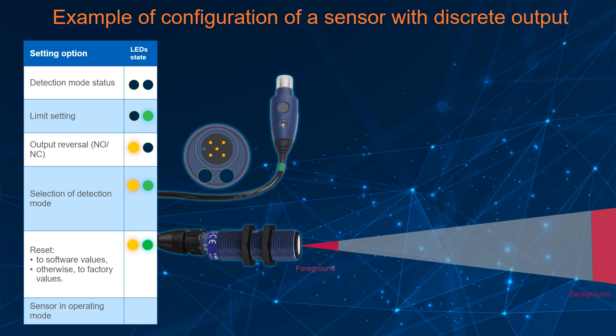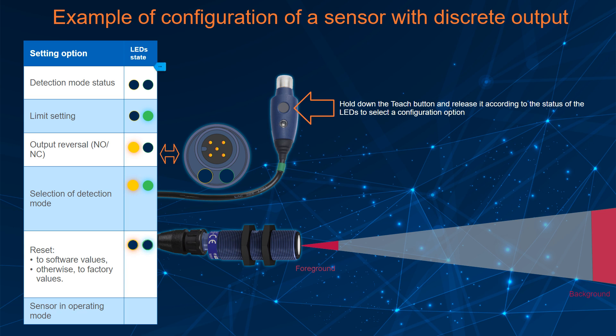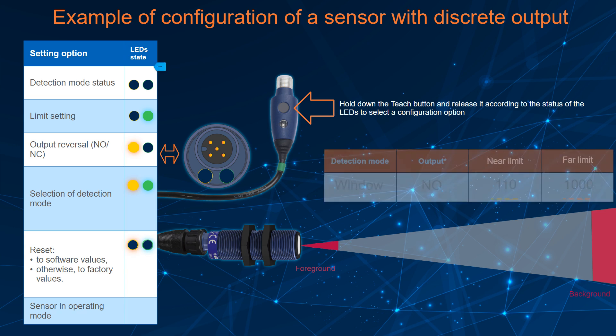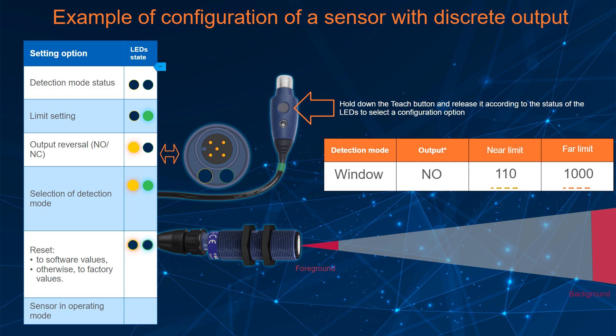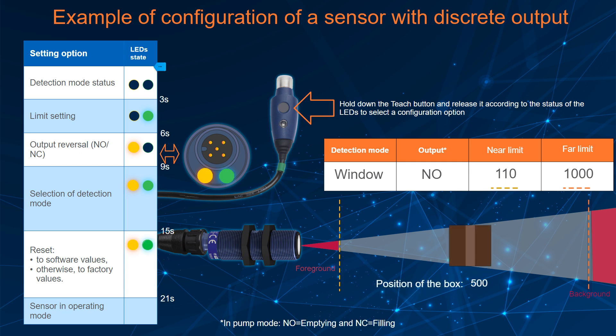To familiarize yourself with the TEACH button configuration, press and hold the button. Release it depending on the desired option. Follow the setting instructions that will appear depending on the option. Follow the influence of the actions on the setting. Feel free to test your configuration by moving the box.